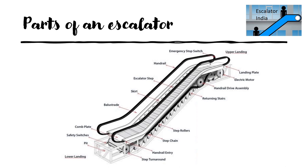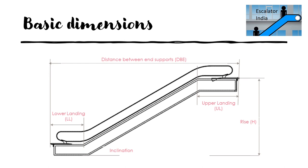Step turnaround — this is the radii part where the steps turn back and travel to the upper or lower landing; both ways are possible, and there will be a turnaround at both the upper and lower landings. The distance between the end supports is the overall length of the escalator, from one end to the other. Whenever a building is constructed, based on the angle and rise, this beam-to-beam distance — the distance between the end supports — must be calculated and implemented in the building to make the escalator fit exactly. Otherwise the escalator will not fit and non-standard design and manufacturing will be required, which increases cost. It is better to go with standard dimensions from the manufacturer.